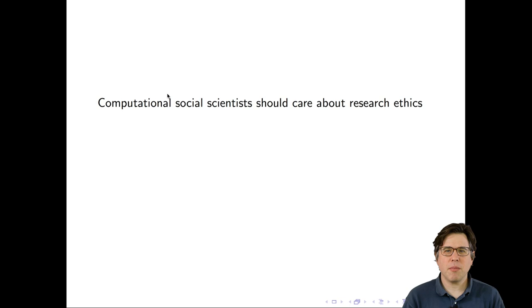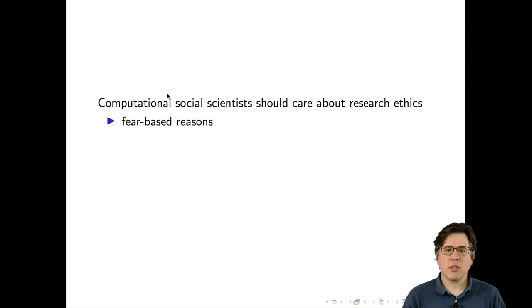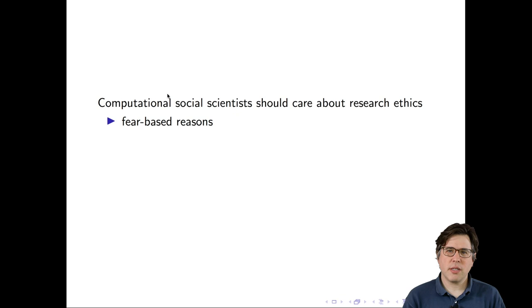First, there are fear-based reasons. None of us want to be in a position where we do something unethical. And in the research I've seen in computational social science, it seems like many computational social scientists are much closer to ethical gray areas than they often realize. So it's important for us to be afraid of ourselves making a mistake. And also for the field as a whole, our field does not want to get tarnished by people who are doing things that are ethically unsound.